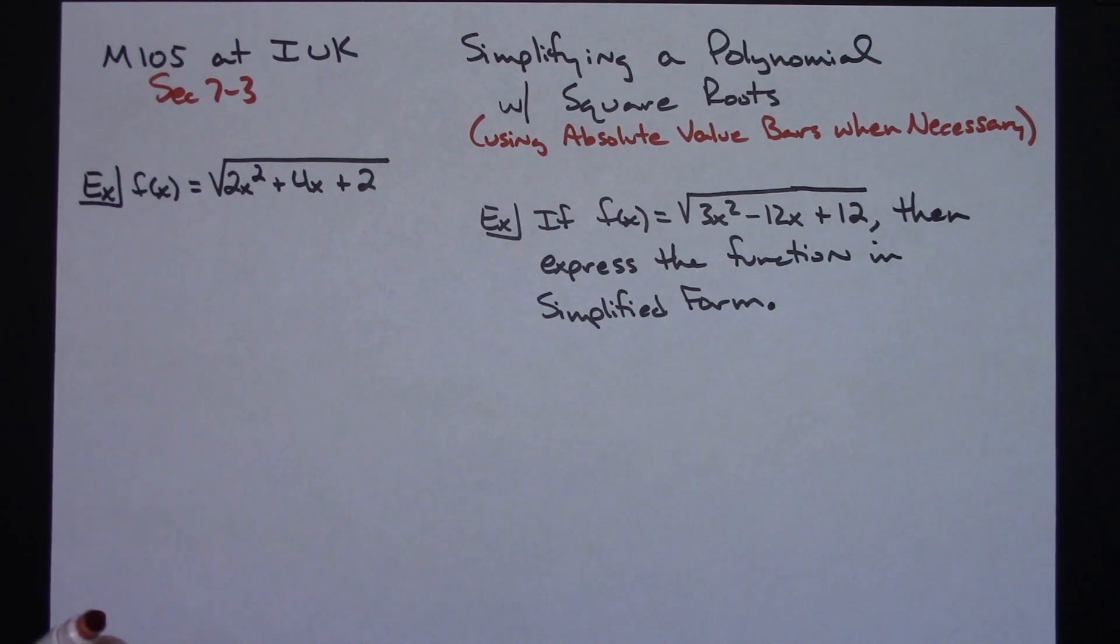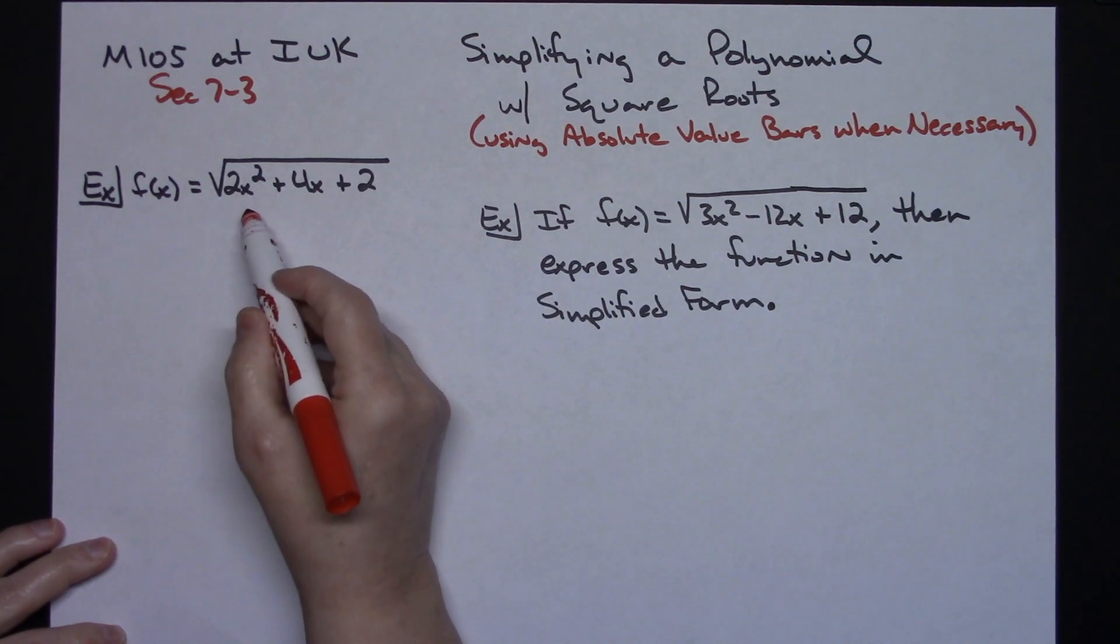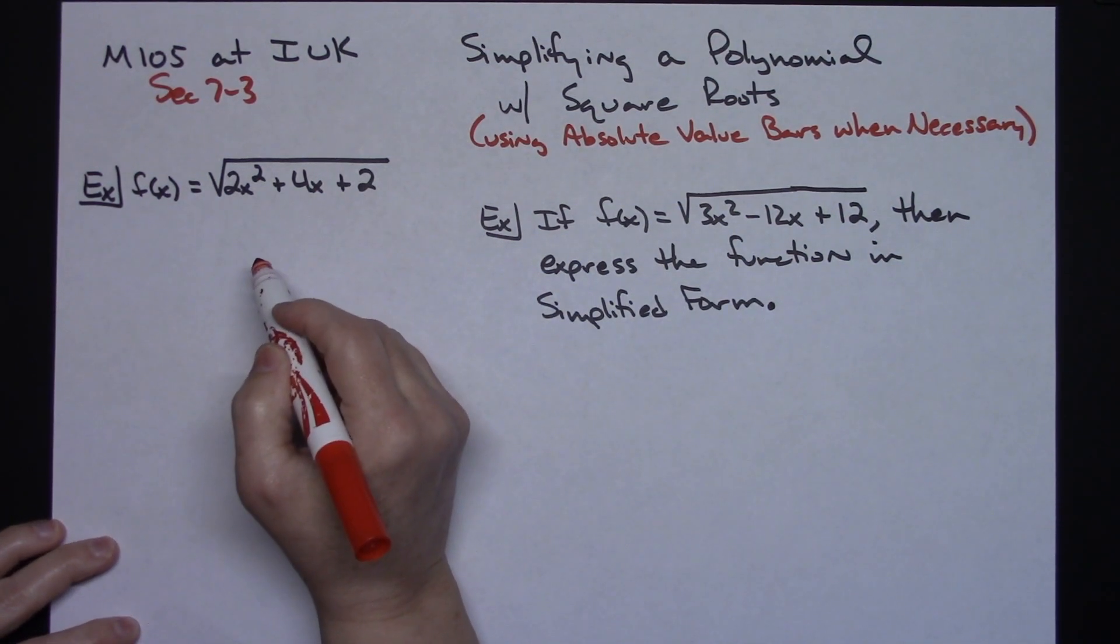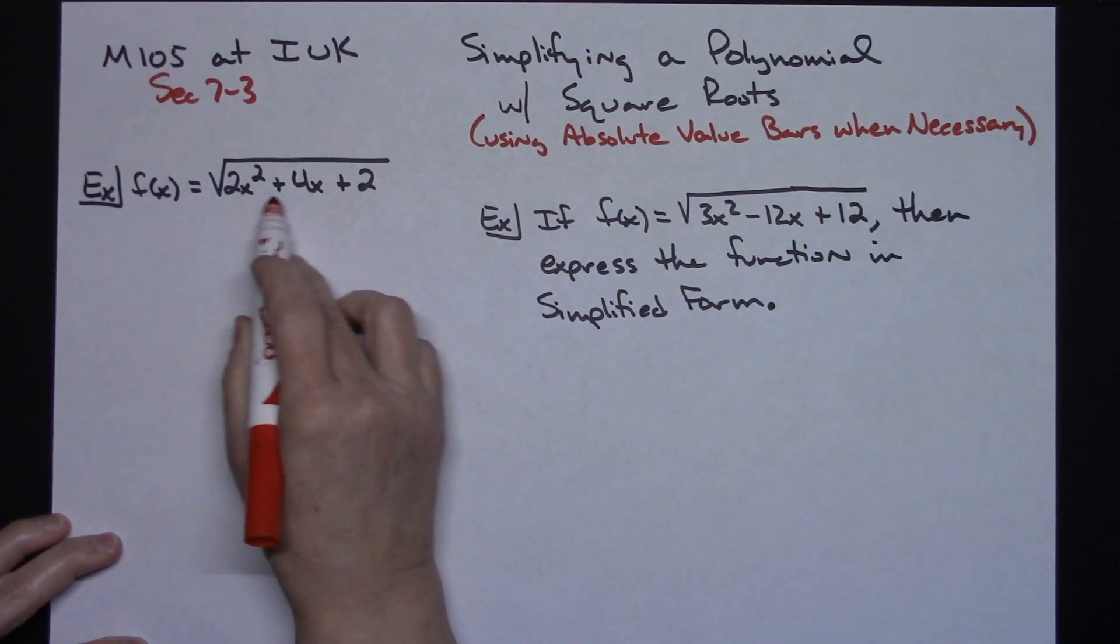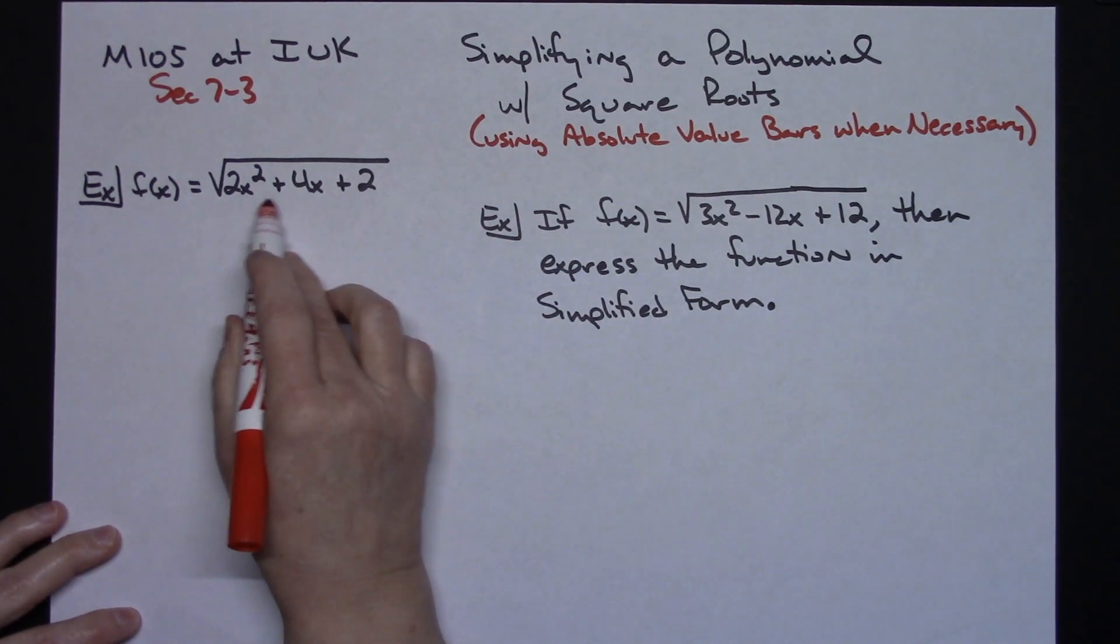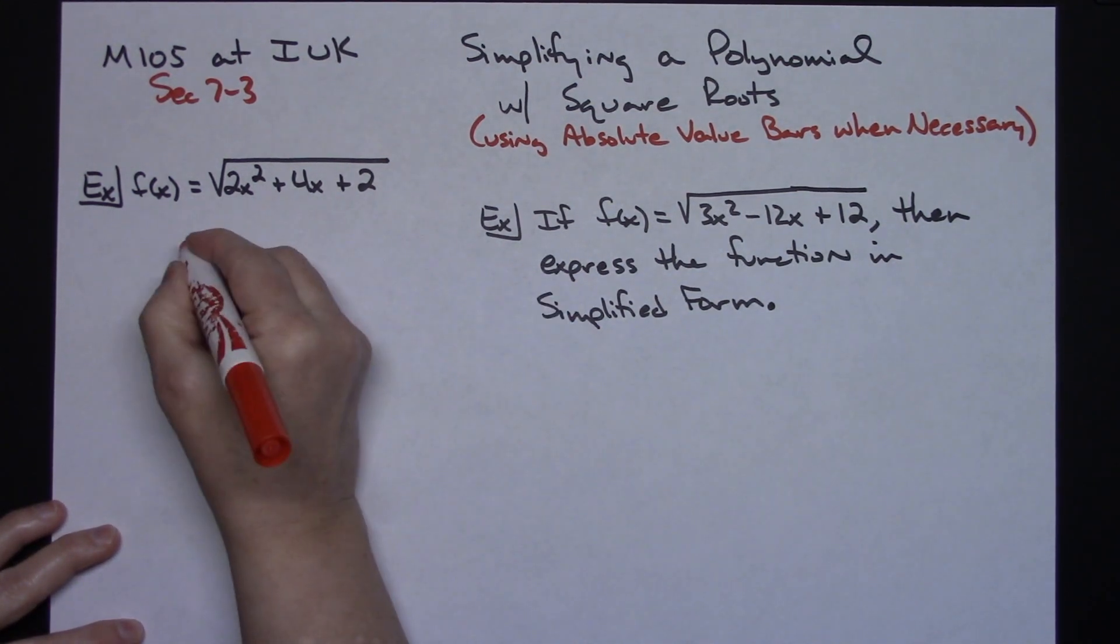In this first example here, let's just say you've got f of x is equal to the square root of 2x squared plus 4x plus 2. What you're going to do is you're going to work underneath this square root as if you just would with any polynomial function. I'm going to take a look at that and see if I can take out a greatest common factor. And I can, I can take out a 2.